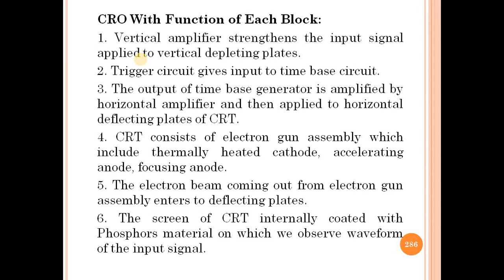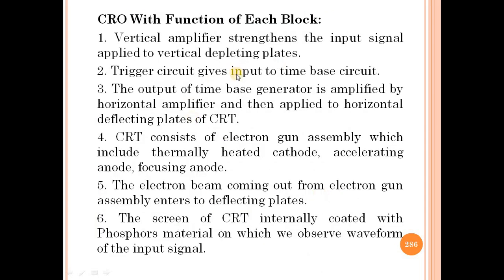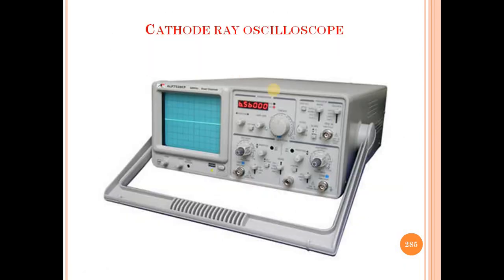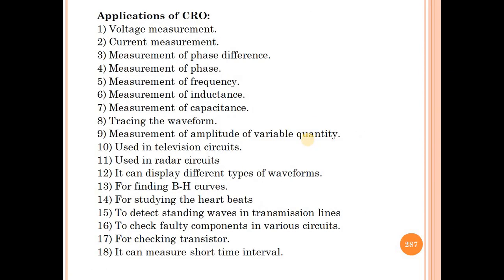So, in this lecture, we discussed the CRO blocks and their functions: vertical amplifier, delay line, trigger circuit, time-base generator, and horizontal amplifier. If you have any doubts about the CRO, you can consult your references.